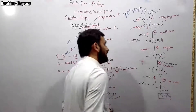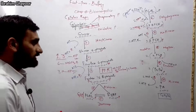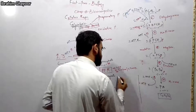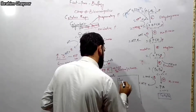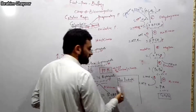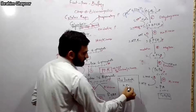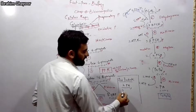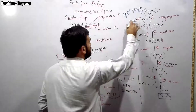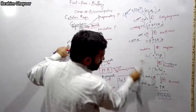Now, the end products of glycolysis: the end products are pyruvate, NADH2, and ATP. Two pyruvate molecules, two NADH2 molecules, and a net gain of ATP are produced from one glucose molecule.